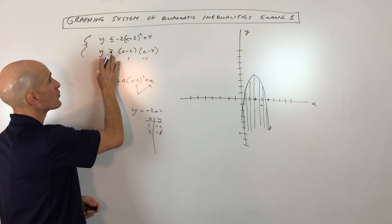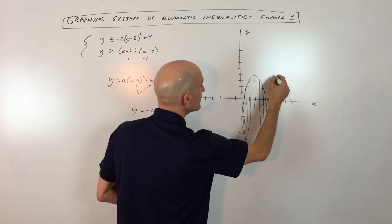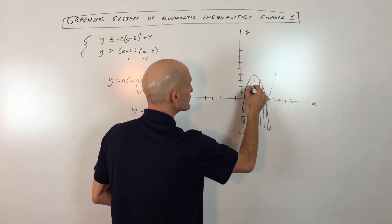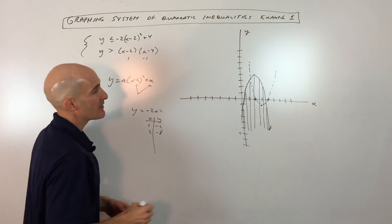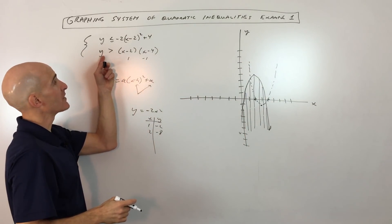Now notice how it's y is greater than, but not equal to. That means this is actually gonna be a dashed or a dotted graph. It doesn't include the points on the parabola. It just includes the points that are greater than.